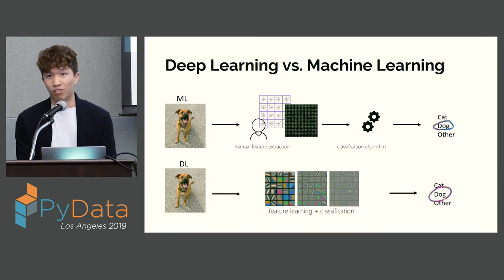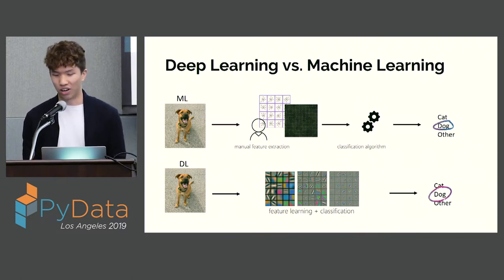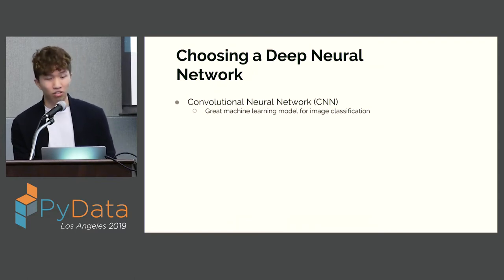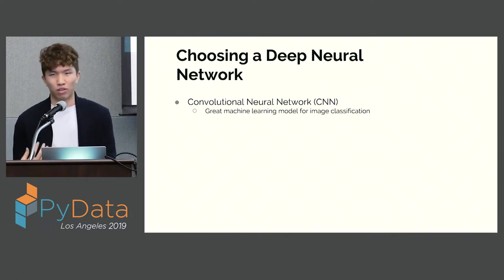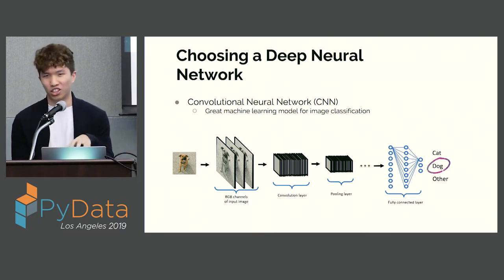With deep learning, it does something called feature learning — it automatically figures out what the important features are that make up a dog and does the classification itself. For images where you don't really know what the features are, this is really, really useful. We're going to use a convolutional neural network, or CNN, because it's been proven in industry by PhD professors to be really good for image classification. You can think of a CNN as having a bunch of layers that process and transform your image to get the output.